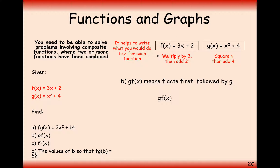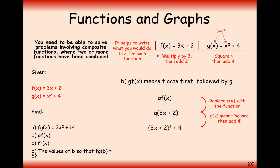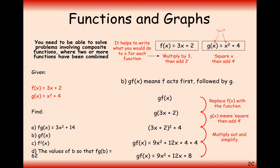Let's do it the other way around: gf(x). We first apply the f function to triple our value inside the bracket and add 2, so x turns into 3x + 2. Now we apply the g function of squaring this value and adding 4. What we've got in the bracket is 3x + 2, so we substitute that into x in x². So (3x + 2)² + 4, which expands and simplifies to 9x² + 12x + 8.